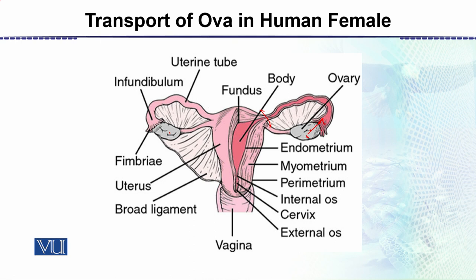Ovary سے لے کے اس point تک یہ smallest path ہے۔ If the egg is not fertilized, it will move all the way downward and will be eliminated through the vaginal opening. تو یہاں پہ ہم نے simply the transport of the ovum کو discuss کرنا ہے — یہاں سے release ہوا اور یہ fimbria ہیں جو کہ finger-like structures ہیں جو اس egg کو اپنی طرف کھینچتے ہیں۔